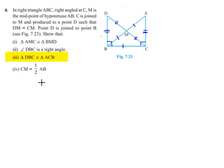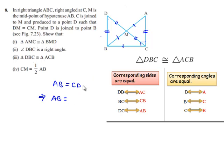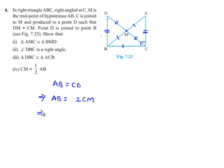Now, since triangle DBC is congruent to triangle ACB, their corresponding sides and angles are equal. The side corresponding to AB in triangle ACB is CD in triangle DBC. So AB is equal to CD. Since M is the midpoint of CD, we can write CD as 2 times CM. Therefore, AB equals 2 times CM, which gives CM equal to half times AB. This is the required fourth proof.